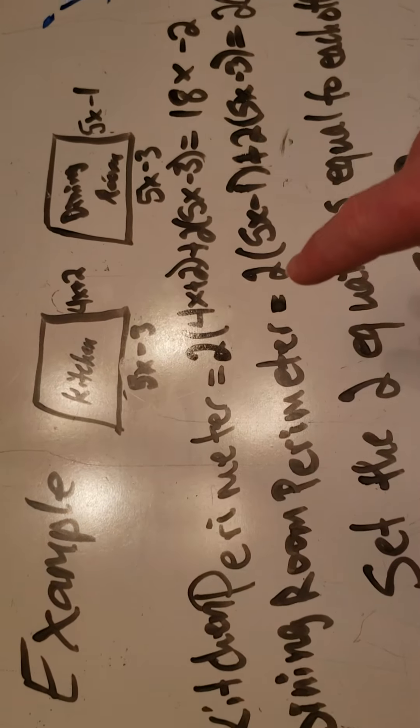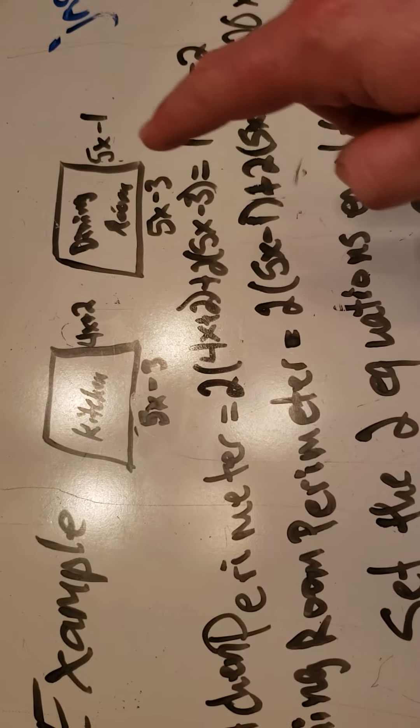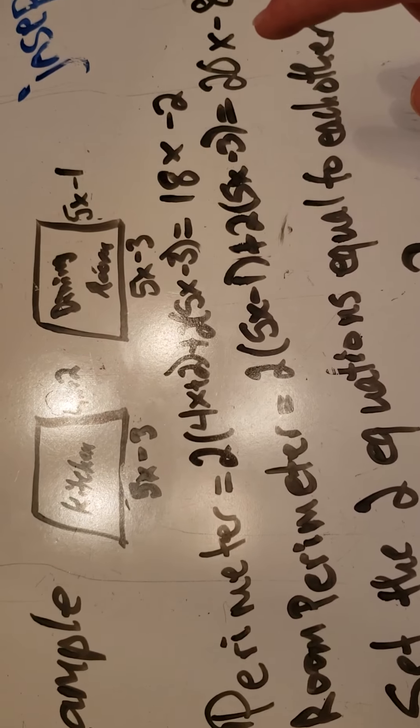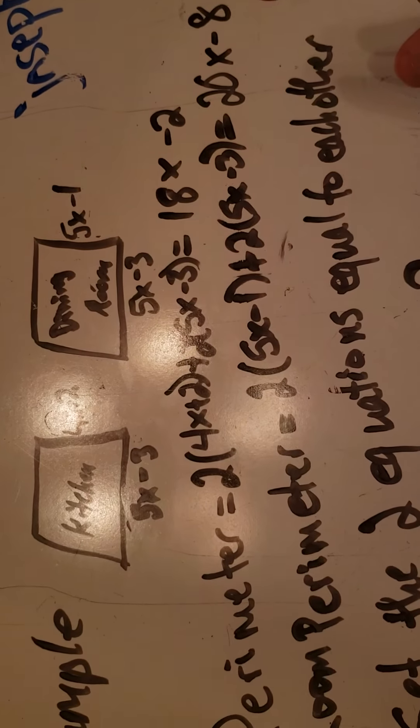For the dining room perimeter, I'm setting up the same equation based off of these numbers. So I have 2 times 5x minus 1 plus 2 times 5x minus 3, which gives me 20x minus 8.